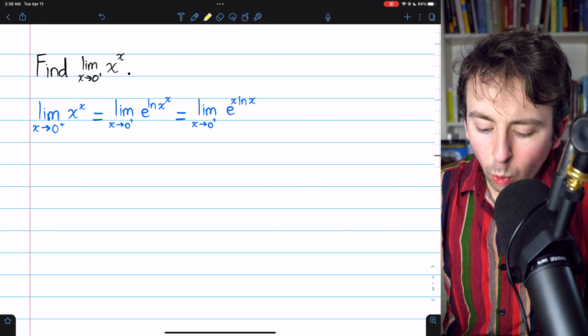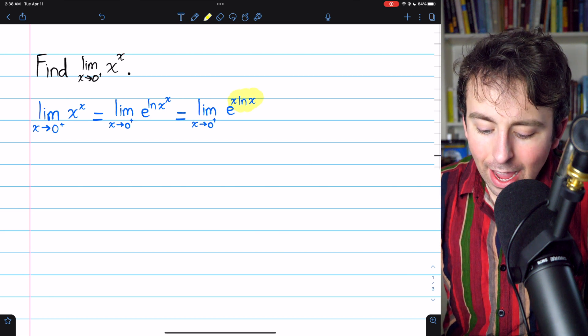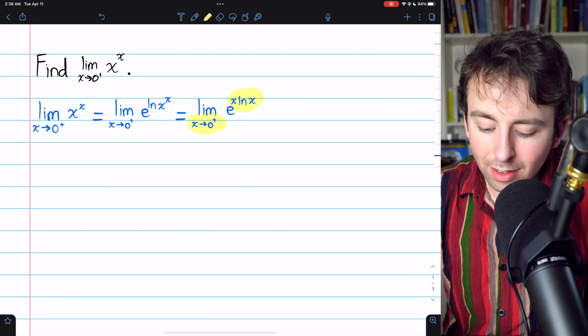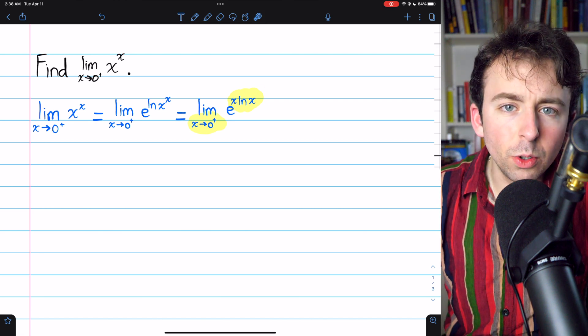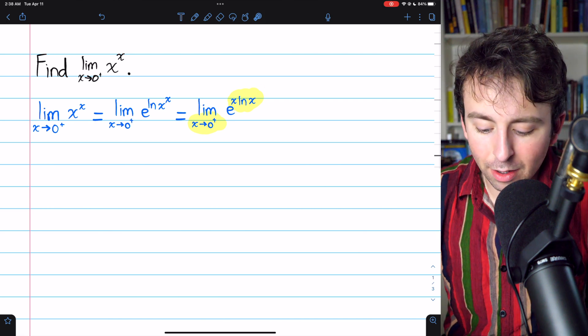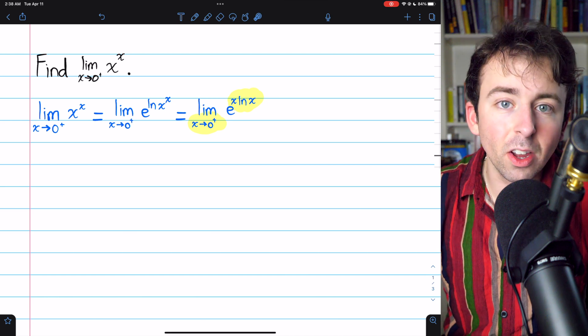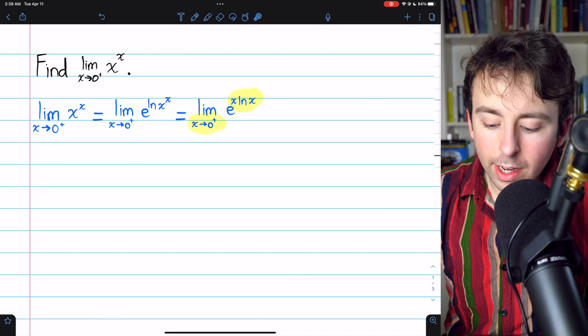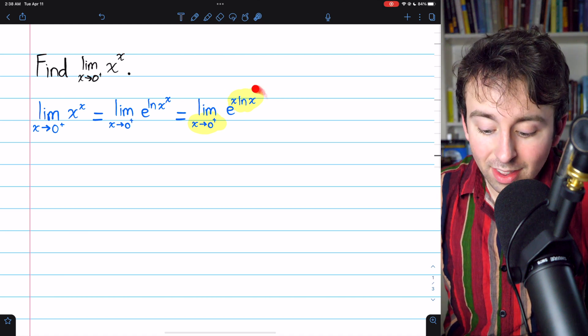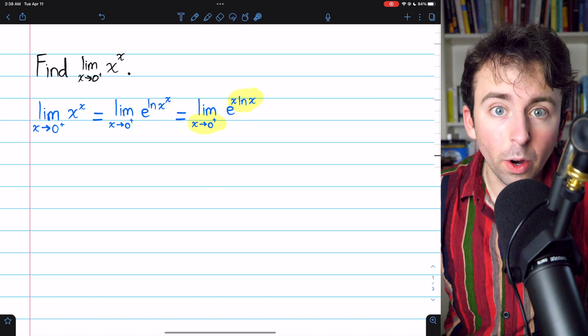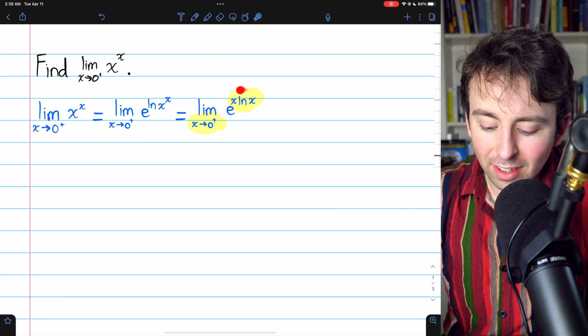The key question is, what's happening to x ln x as x approaches 0 from the right? If x ln x is going to infinity, for example, then certainly e to the x ln x is going to infinity. On the other hand, if x ln x is approaching 0, then this thing is approaching 1, which is, of course, what we expect. Alright, so how are we going to settle this?